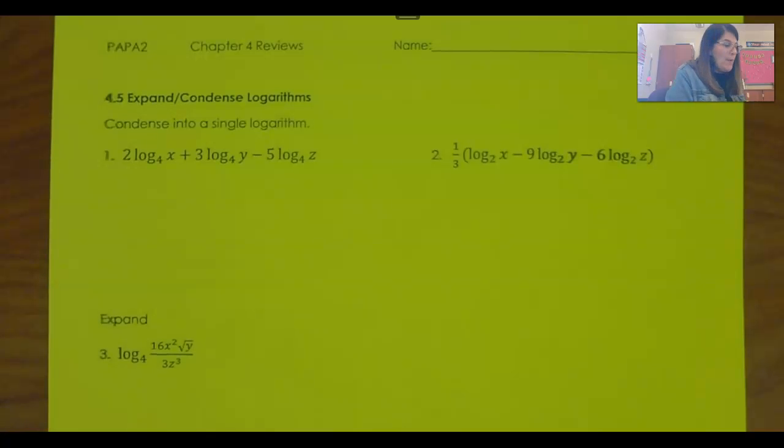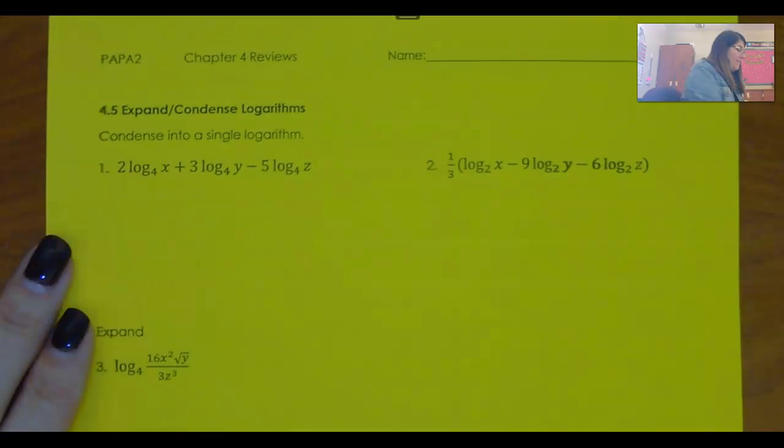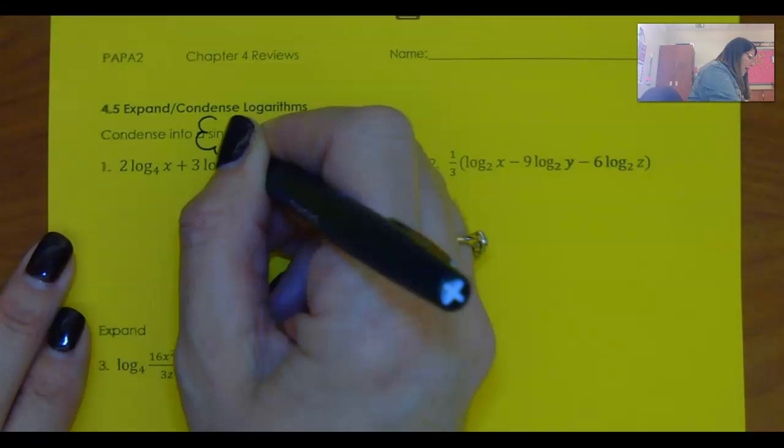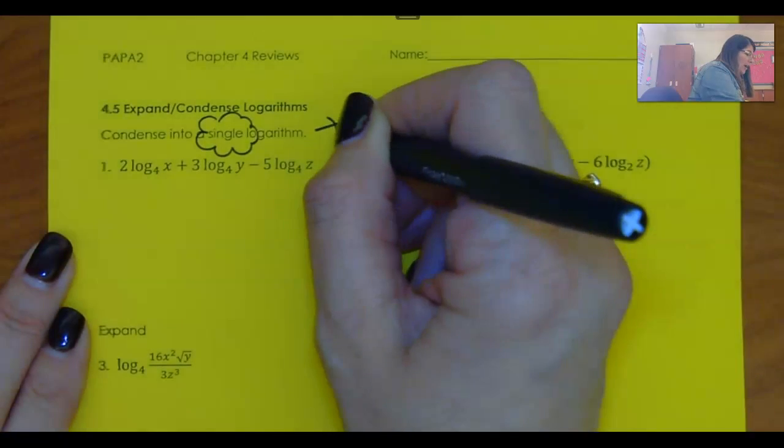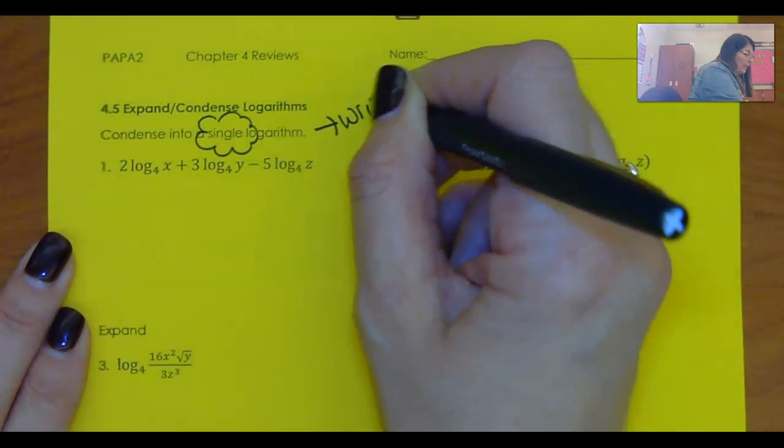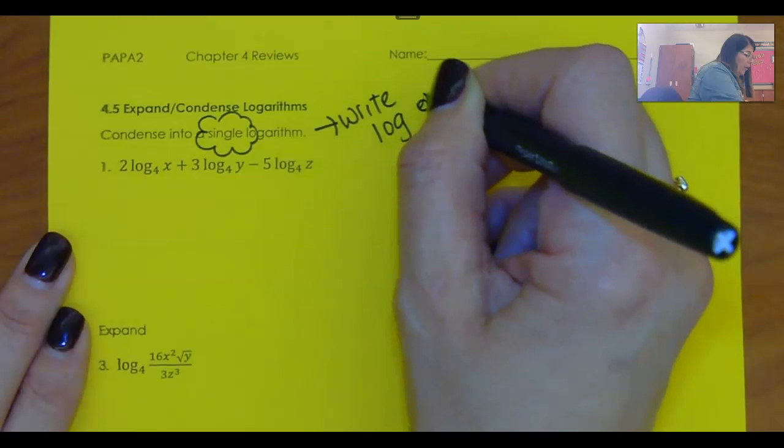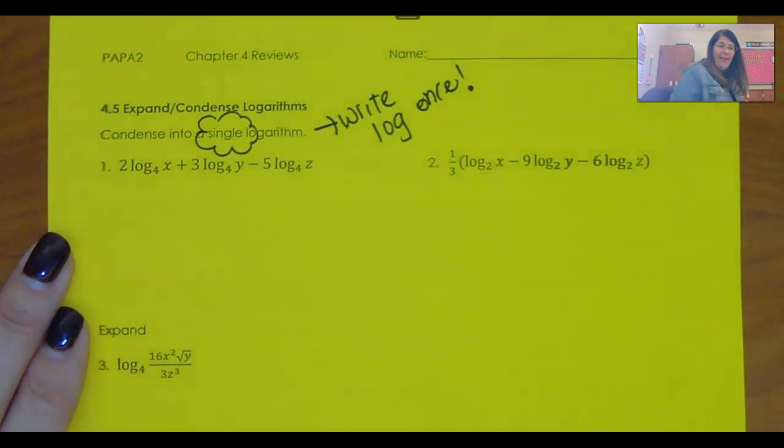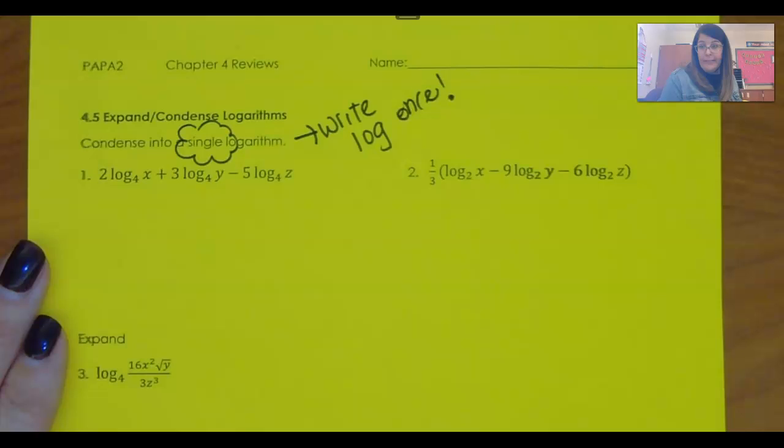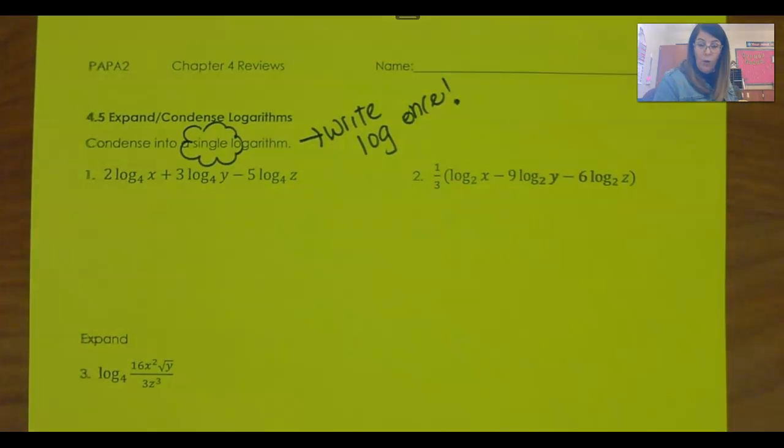Okay, so this is a quick little warm up at 4.5. What we are doing are expanding and condensing logarithms. In the direction, say, write it as a single log, that means you only get to write log once. That'll help you remember you're not finished if you have it not in one log.